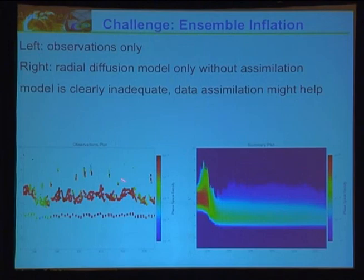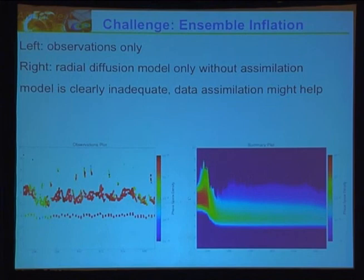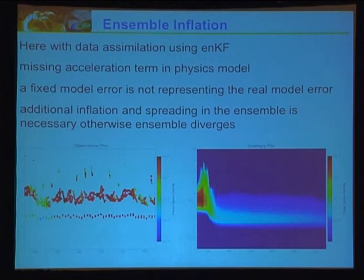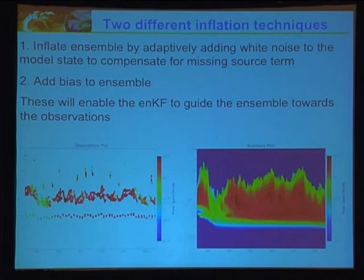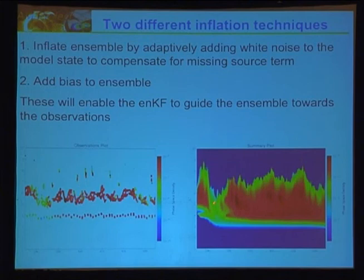When we just assimilate without model inflation, the model error is so dominant that even with assimilation we don't get the correct solution — model errors are dominating and preventing data assimilation from correcting the estimate. Once we tried inflation — adding some noise into the model to correct it — we got a dramatically different solution: really good agreement with the observations and good dynamics in the model.